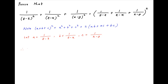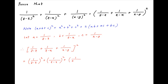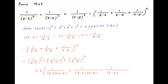Substituting these values in the above equation, we get [1/(y−z) + 1/(z−x) + 1/(x−y)]² = 1/(y−z)² + 1/(z−x)² + 1/(x−y)² + 2 times, in brackets, 1/[(y−z)(z−x)] + 1/[(y−z)(x−y)] + 1/[(z−x)(x−y)].